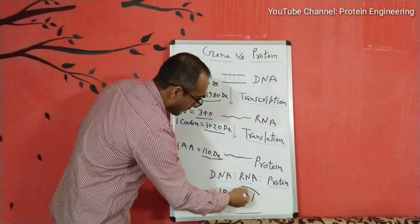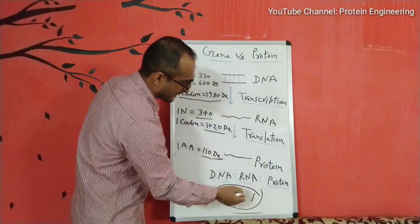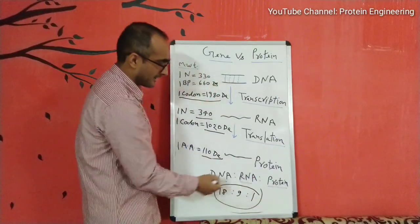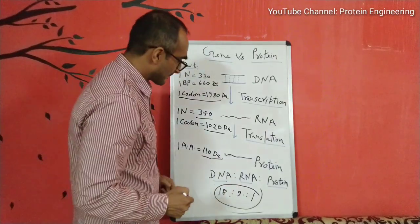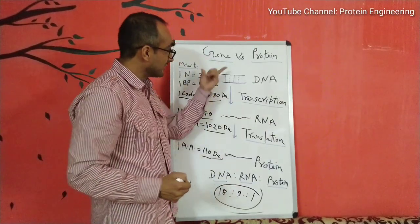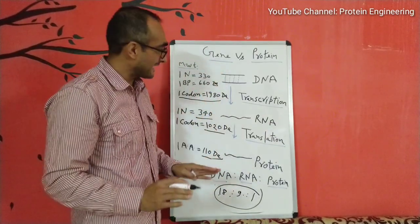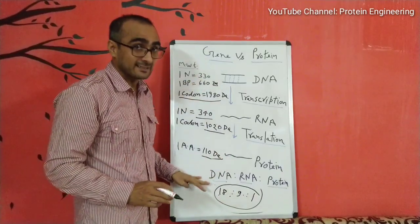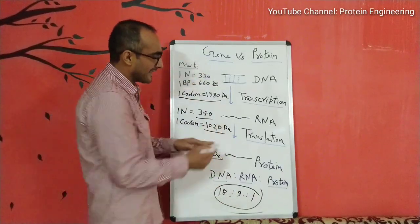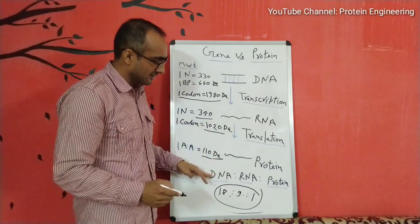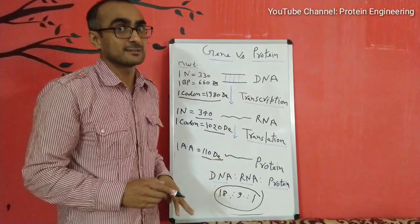If you compare the ratio of amino acid in protein to RNA to DNA, you will see that the ratio is 1:9:18. This means the DNA gene is on average 18 times larger than the protein. And RNA is nine times larger than the amino acid sequence of the protein.